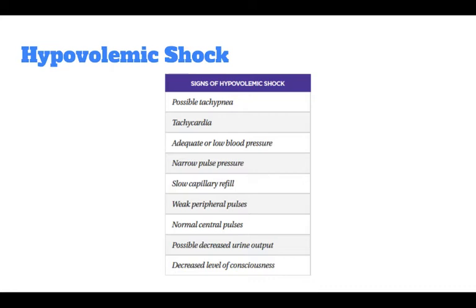If fluid boluses do not improve the signs of hypovolemic hemorrhagic shock, consider administration of packed red blood cells without delay. Albumin can also be considered for additional intravenous volume for shock, trauma, and burns as a plasma expander. If fluid boluses do not improve the signs of hypovolemic hemorrhagic shock, re-evaluation of proper diagnosis and occult blood loss should be considered.